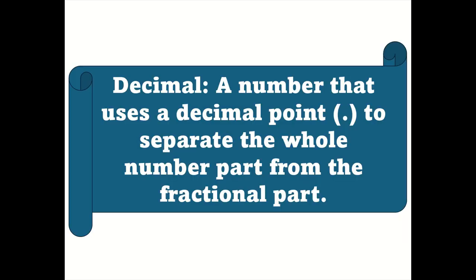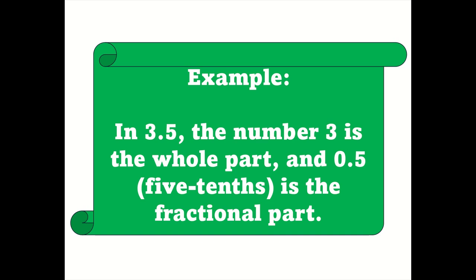Decimal: a number that uses a decimal point to separate the whole number part from the fractional part. For example, in 3.5, the number 3 is the whole part, and 0.5 — 5 tenths — is the fractional part.